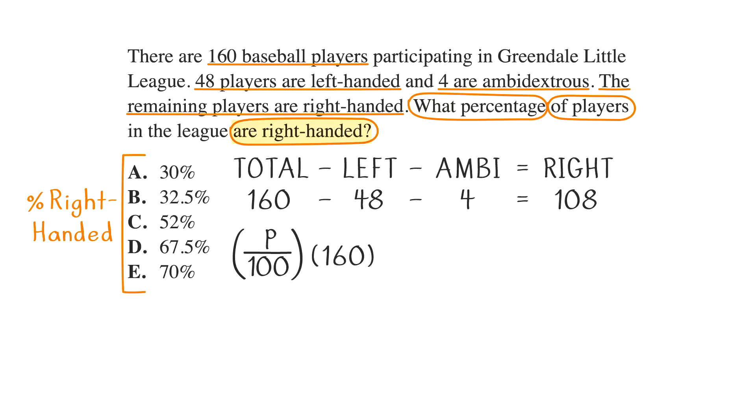The last part of the question says are right-handed. We know that are means equals, and there are 108 right-handed players. So, we can write our complete equation: P over 100 times 160 equals 108.